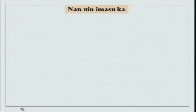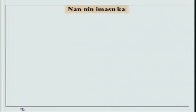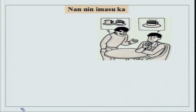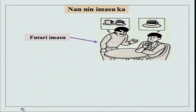We also did nan nin imasuka, meaning how many people are present. Look at a picture and see how many people are present. When two people are present, the answer is: nan nin imasu ka? Futari imasu. There are two people here.